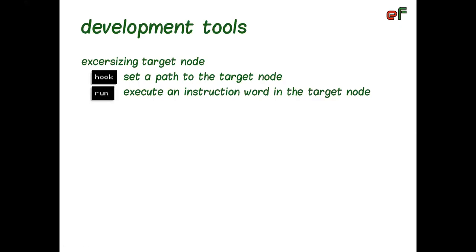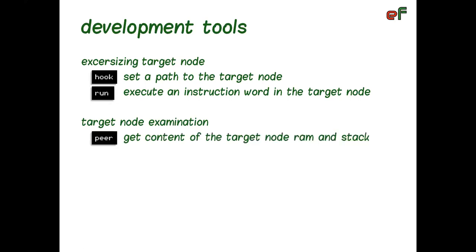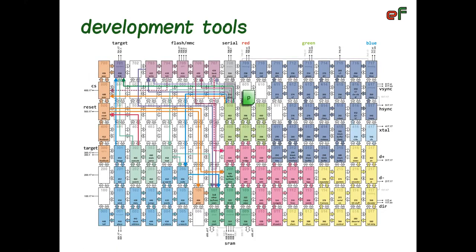Another useful tool allows target node examination. It's defined as word peer, and it displays target node stack as well as content of its RAM. The word expects a path to the target node on interpreter stack. It takes the path, builds an ether message, and sends this message to the utility node 600, asking it to get the data. This node, together with node 700, sends a message to the target node via service line, where the message delivers code in its payload that reads content of target node RAM and stack, and sends the content back to node 700 as ether reply.